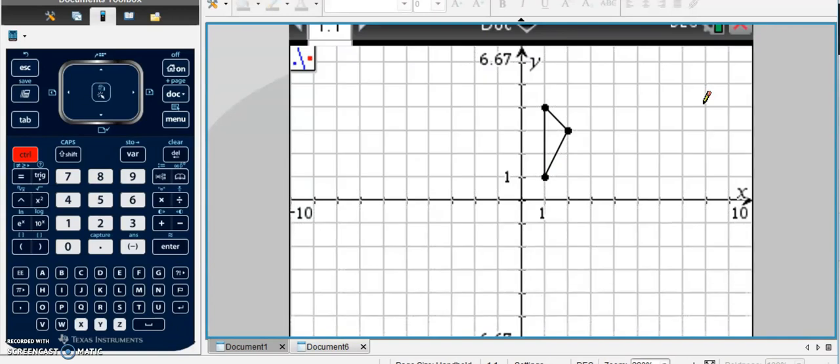Now, if I want to get a little bit more complicated and reflect it over a line, I'm actually going to have to construct that line. For instance,